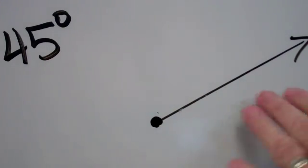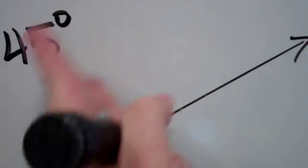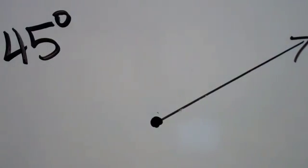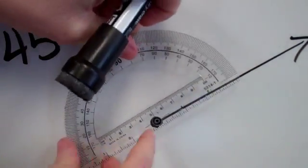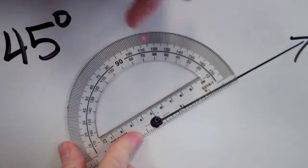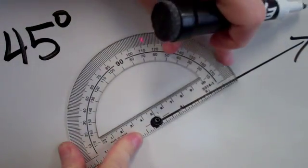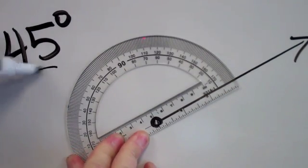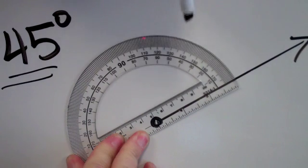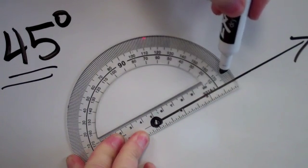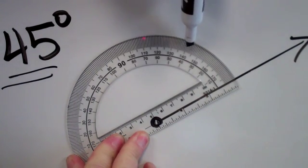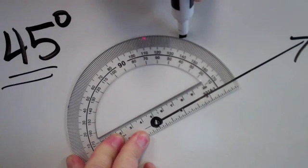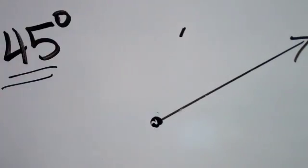Now I'm going to make a 45-degree angle. I'll line up my target right on the vertex and line up the zero right along that ray. Then I'm going to count over 45 degrees: 0, 10, 20, 30, 40, and then 45 would be halfway between 40 and 50. There's my little tick mark.